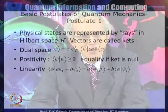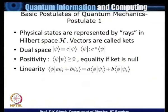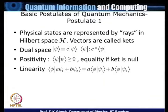There are no postulate numbers which are sacrosanct — these numberings are entirely mine. The first postulate of quantum mechanics is that physical states are represented by rays in Hilbert space, which I represent by the script H, and these vectors in the Hilbert space are known as kets.